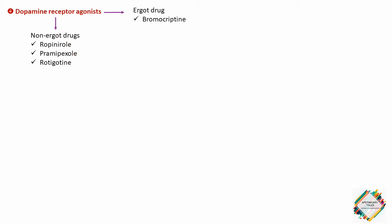Next, we are going to talk about dopamine receptor agonists. This group of antiparkinsonian compounds includes bromocriptine, an ergot derivative, and non-ergot drugs such as ropinirole, pramipexole, rotigotine and the newer agent apomorphine. These agents have a longer duration of action than levodopa and are effective in patients exhibiting fluctuations in response to levodopa. Initially, therapy with these drugs is associated with less risk of developing dyskinesias and motor fluctuations as compared to patients started on levodopa.